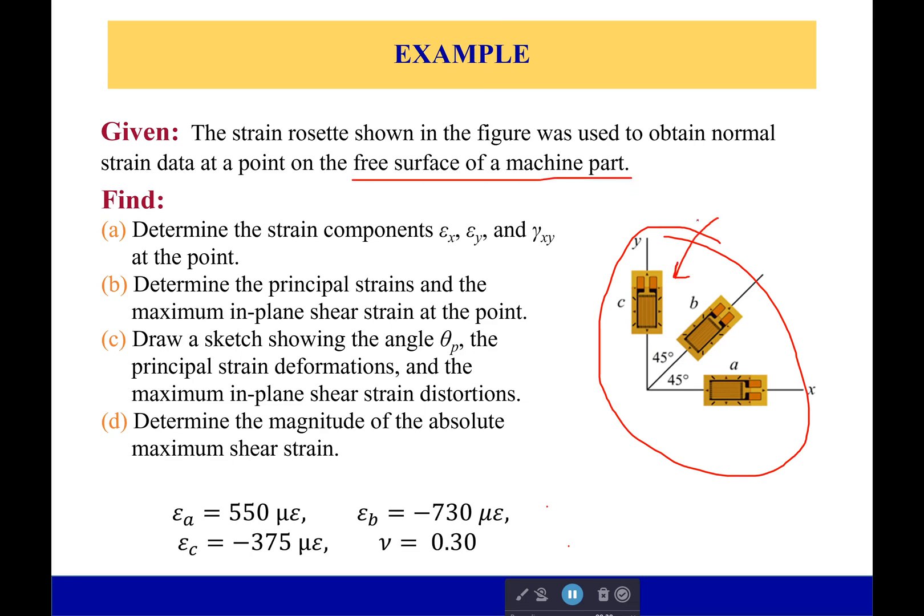You'll measure the strain in each of these, and from that and the known angles in between them, you can actually solve for your principal strains. So using these numbers right here for the strains in each of the strain gauges, as well as our Poisson's ratio, let's go ahead and try this out.